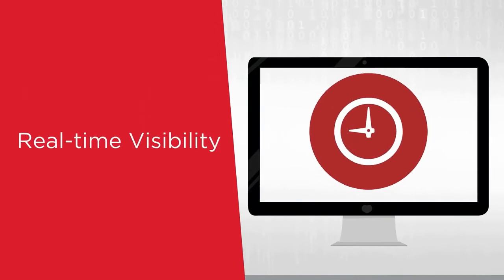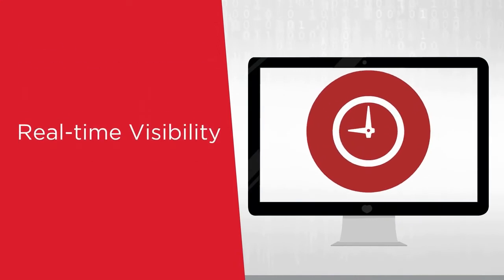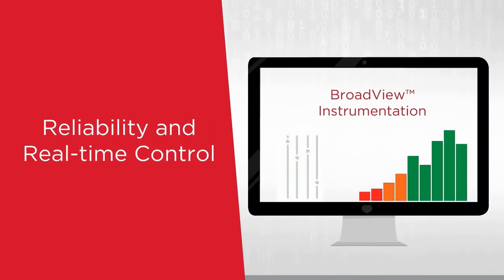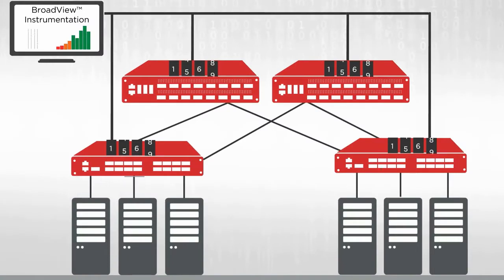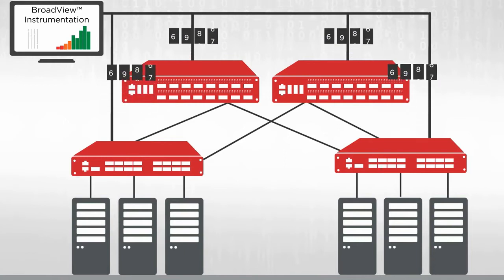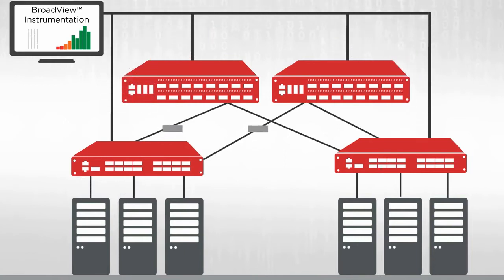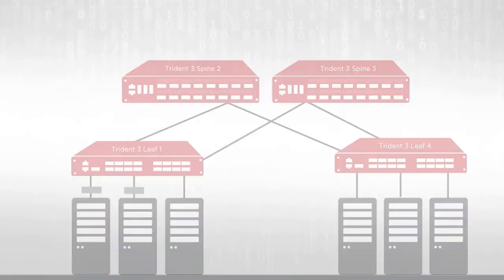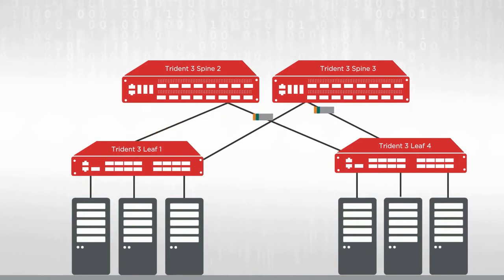A network with increased real-time visibility enables better reliability and real-time control. In traditional network monitoring, an application polls the switch host CPU to gather aggregated telemetry every few seconds or even minutes. In-band telemetry enables packet-level telemetry by having key details related to packet processing added to the data plane packets without consuming any host CPU resources.